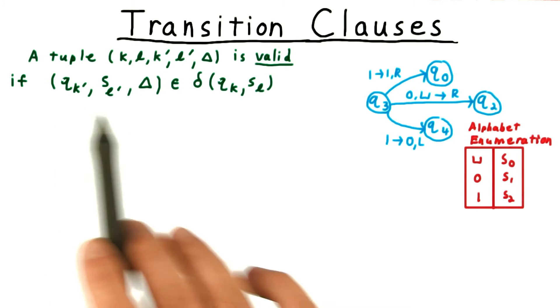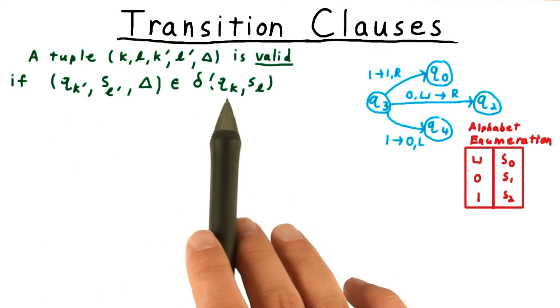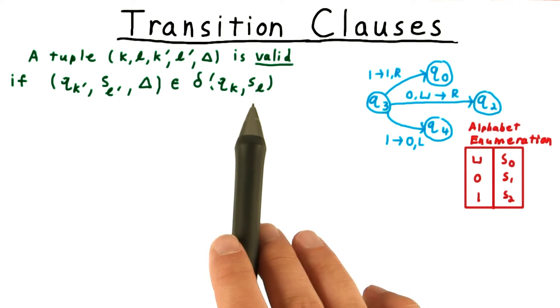That is to say, this has to be one of the valid transitions, given that we are in state q, k, and that we read the symbol s, l.